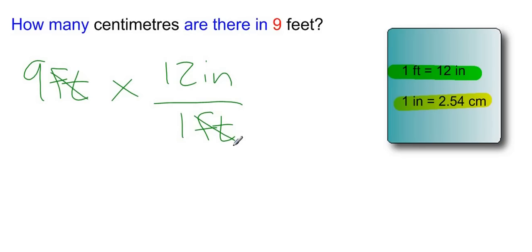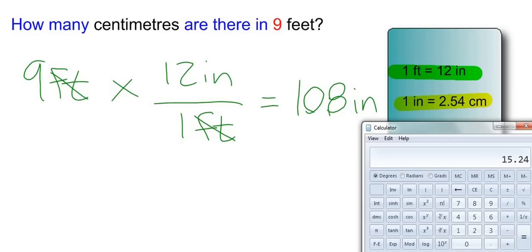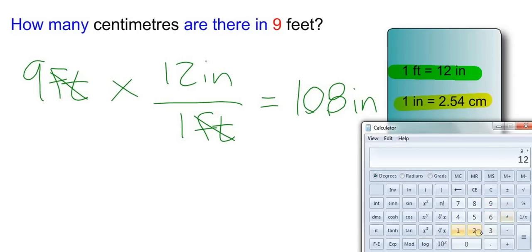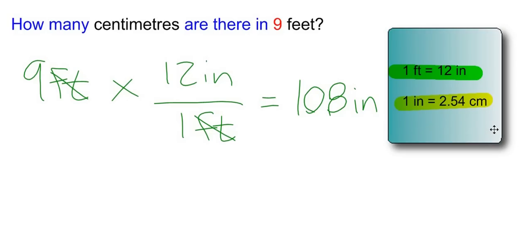Feet will cancel out, and then I have 9 times 12, and 9 times 12 is 108 inches. If you're not okay with your 12 times tables, you can always use the calculator and confirm: 9 times 12 equals 108. So we know we have 108 inches, which is the exact same thing as 9 feet.